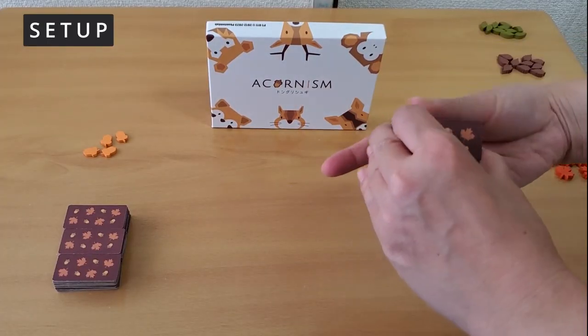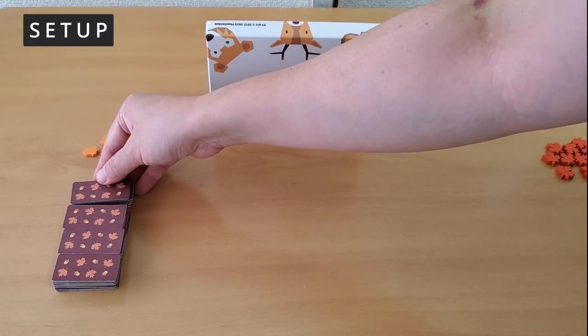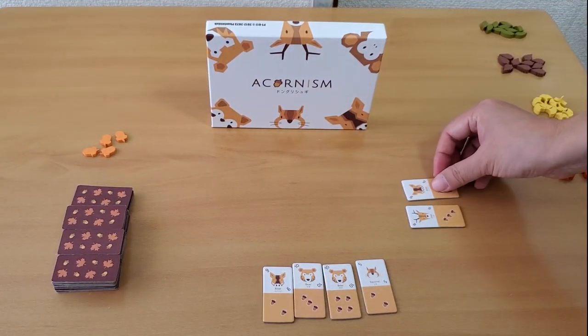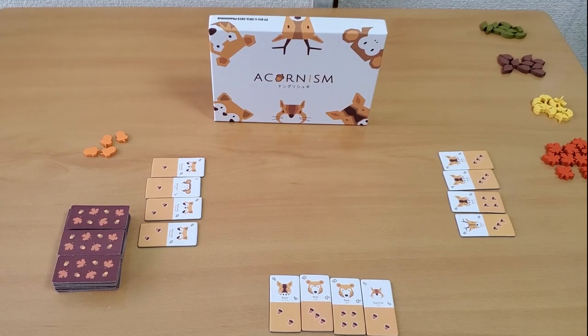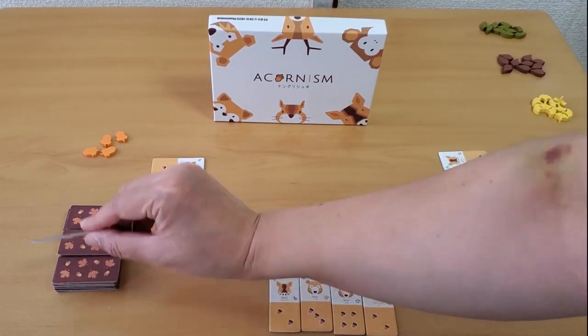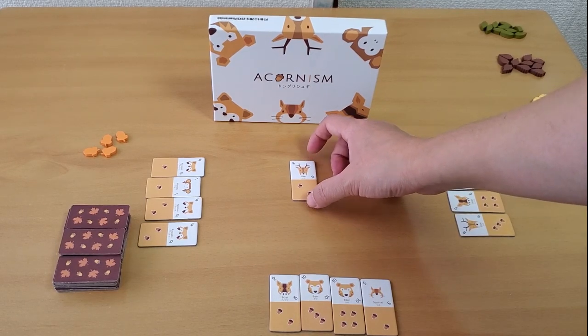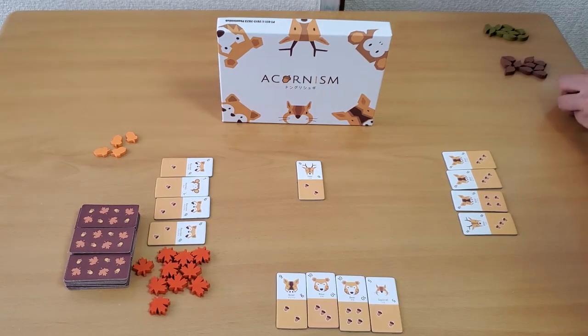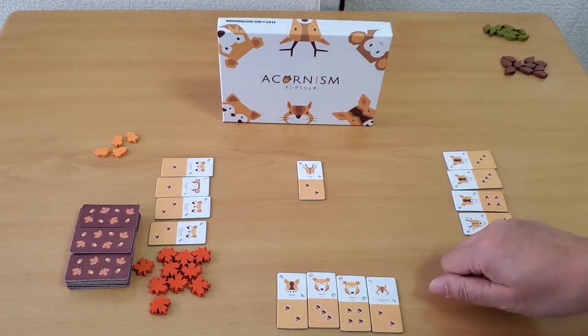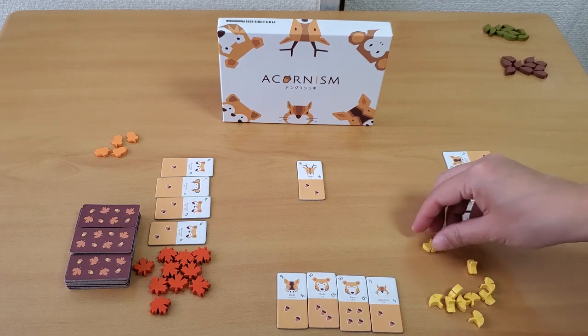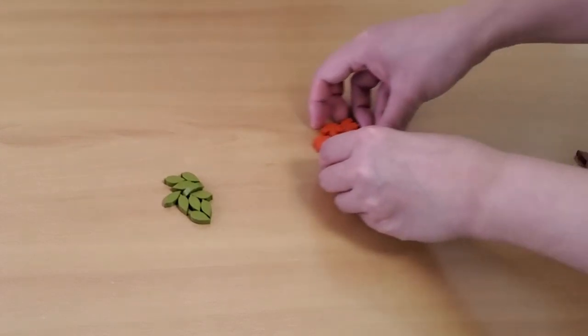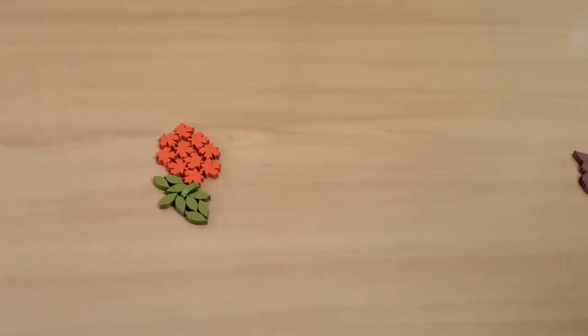To set up the game, shuffle all the tiles face down and form a pile. Each player then draws four tiles and places them face up in front of them. Everyone can see each other's tiles. Then draw one tile and place it face up on the centre of the table. That is the starting tile. In a three to four player game, each player takes one set of autumn leaf tokens. In a two player game, each player can take two sets of autumn leaf tokens. Then play rock, scissors, paper to start and the winner is the first player. Play goes clockwise.